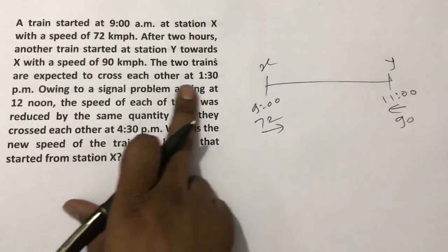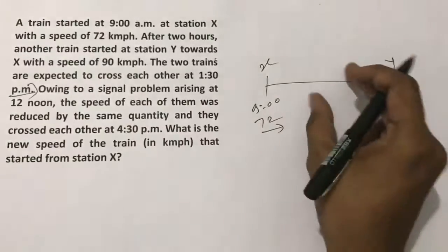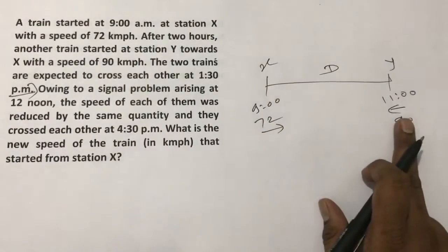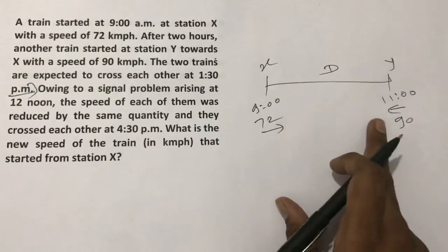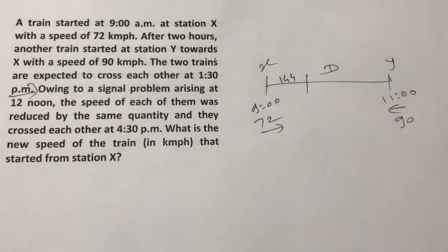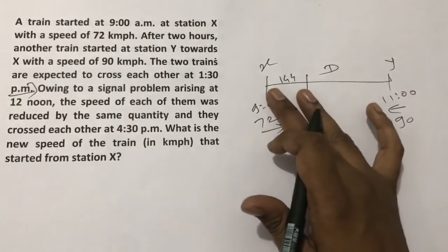The 2 trains are expected to cross each other at 1:30pm. We can find this distance - since this train started at 9 and this one at 11, from 9 to 11 in the first 2 hours, it must have covered 144 km at 72 kmph speed.